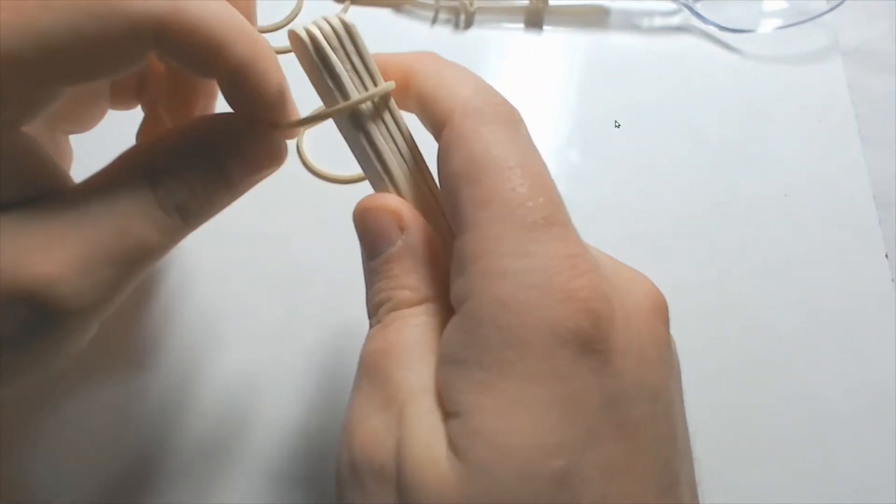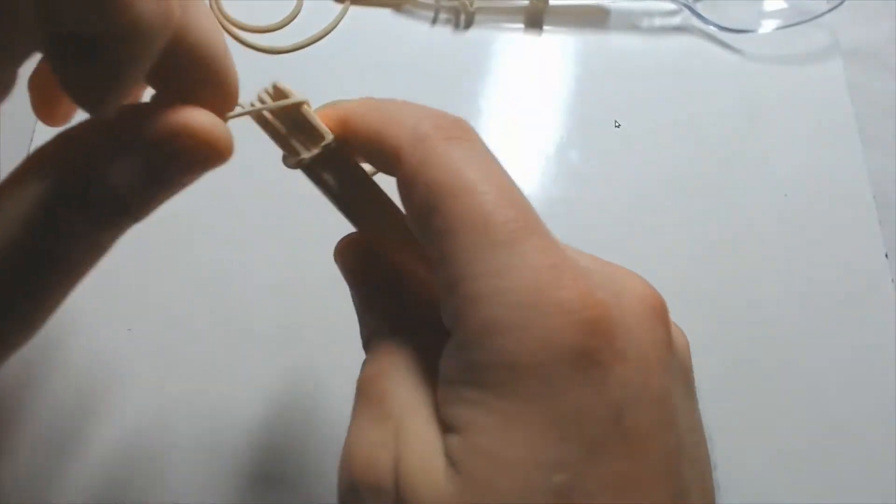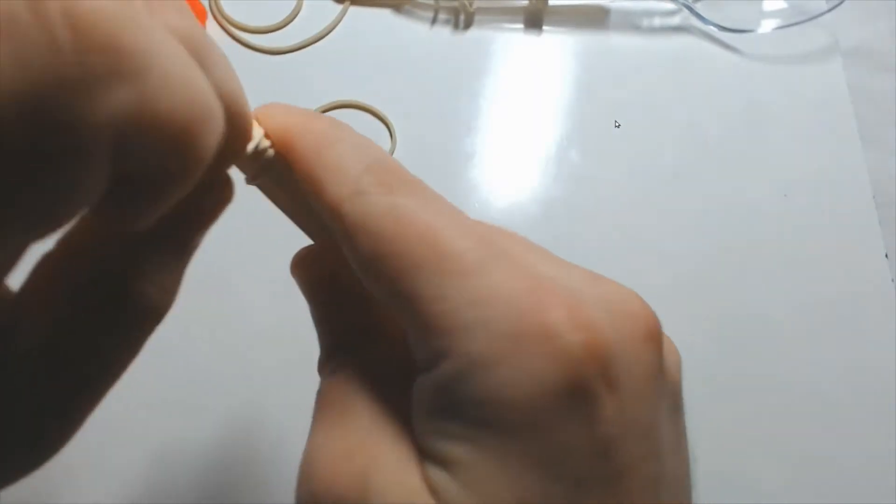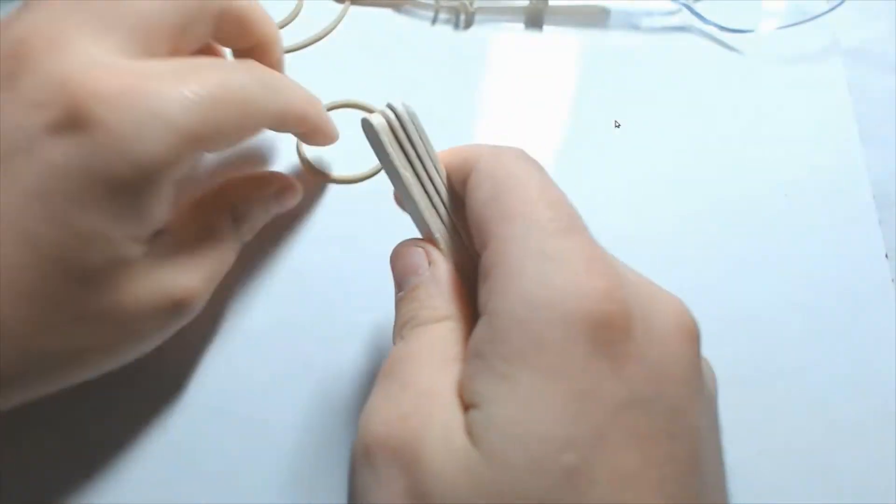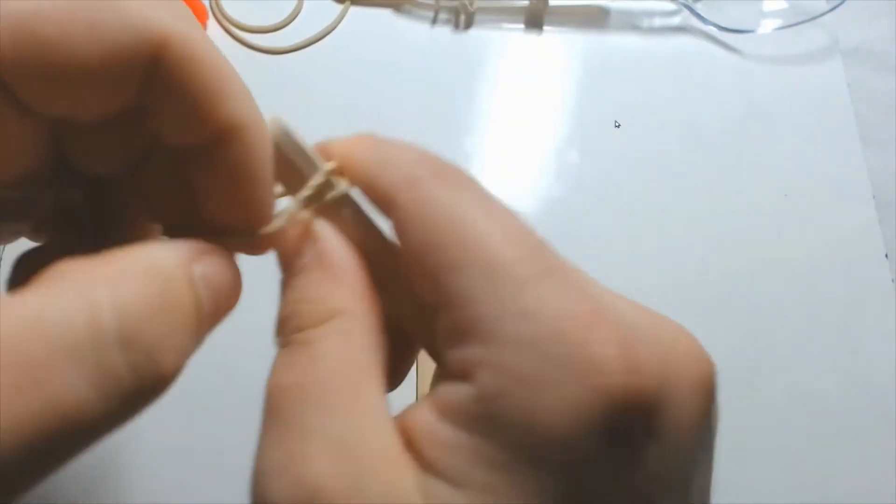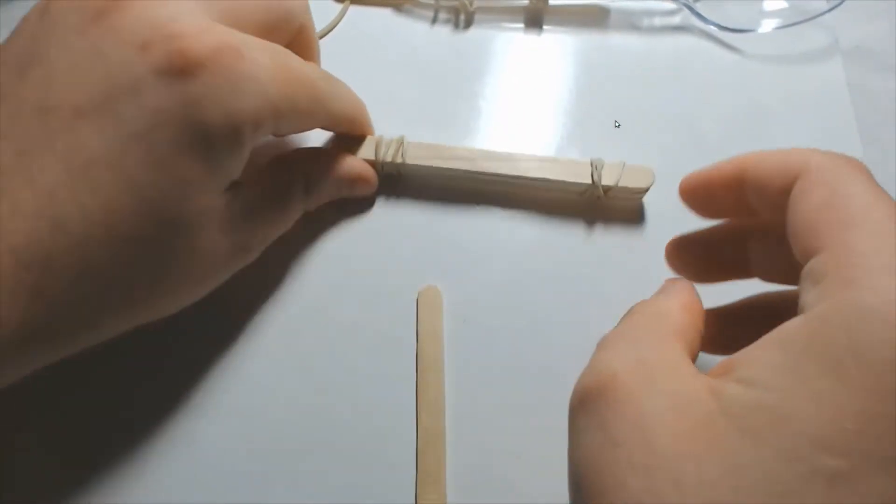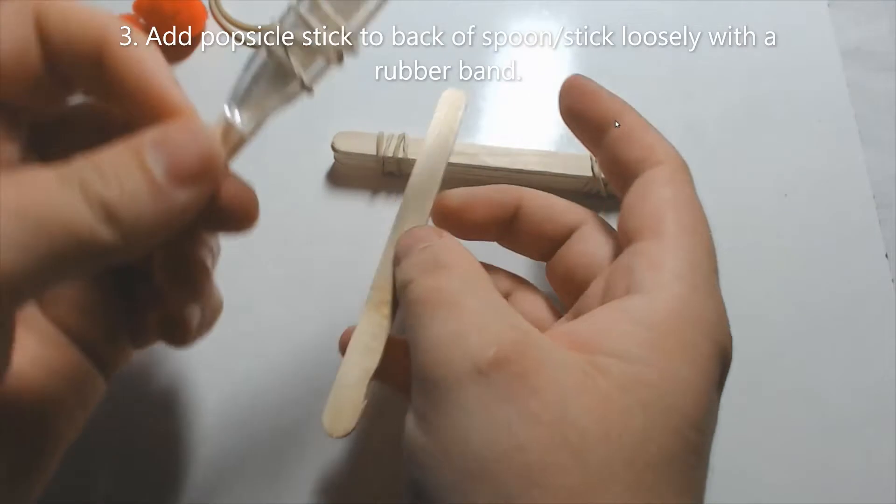And again, we are going to secure these five popsicle sticks together with two rubber bands at each end. So one goes on one end and then the other one goes on the opposite end, and we just wrap it around till they're nice and balanced together. Repeat it with the other side, wrap and twist.